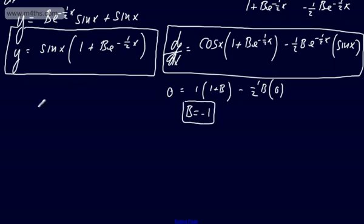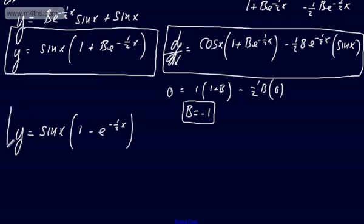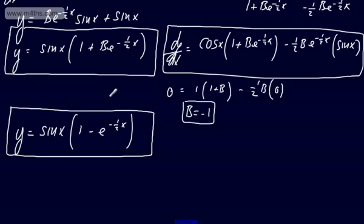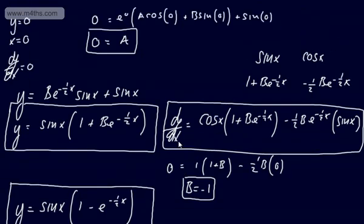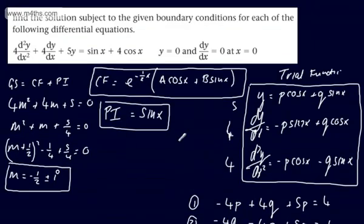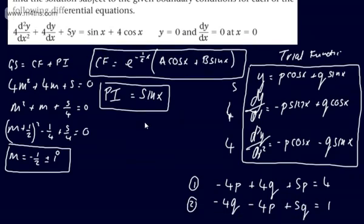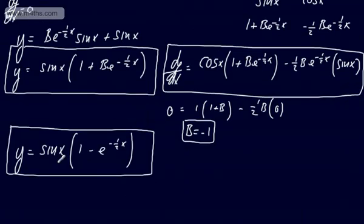The specific solution is y = sin x(1 − e^(−x/2)). You don't have to factor it, but that is the specific solution given the boundary conditions. The whole playlist is sequential — we build up step by step — and that right there is exactly what we require.